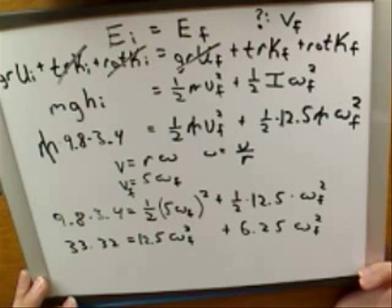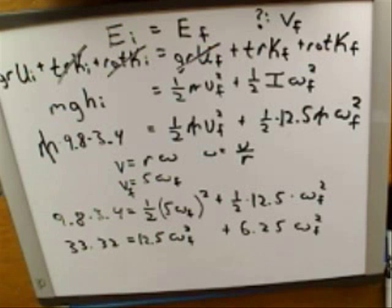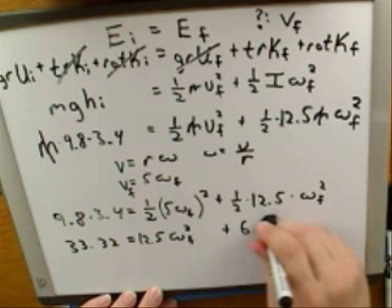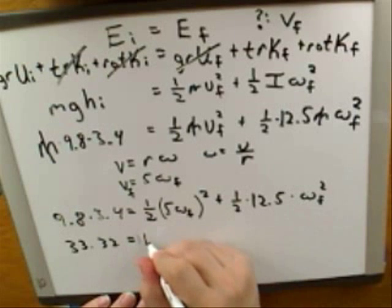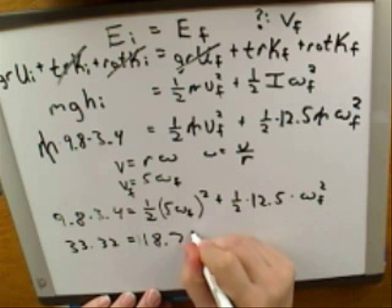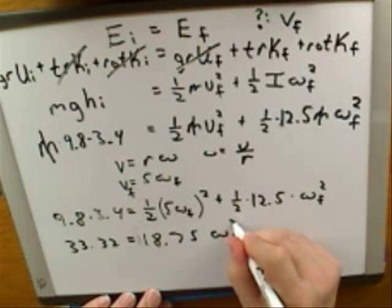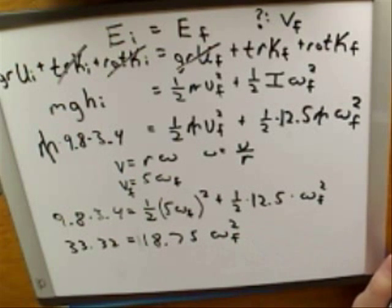Good. So what's our new equation? 18.75 omega final squared. Right. All right. Things are getting simpler. Now what?